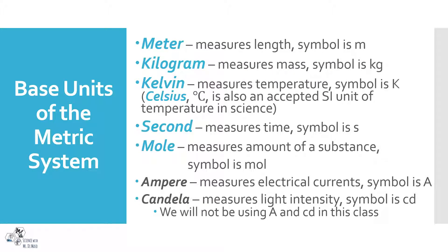The base units make up the basic part of the metric system. The meter measures length, symbol M. The kilogram measures mass, symbol kg. Kelvin measures temperature, symbol K — not degrees K, just K. Celsius is used so commonly worldwide that it's essentially an unofficial SI unit for temperature. Second is the unit for time, symbol S, and the mole measures the amount of a substance, symbol mol.